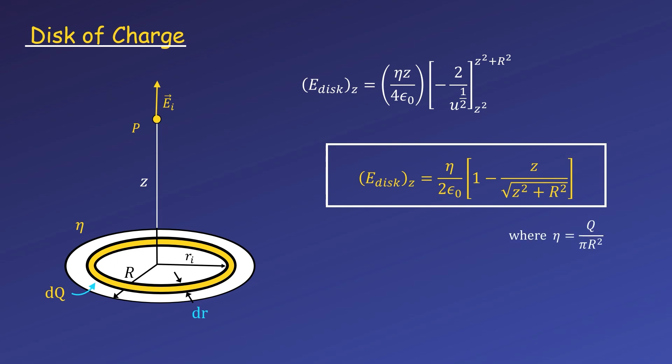And remember, our surface charge density eta is equal to the total charge over the area, which is πR². This equation is valid for positive z values, or above the disk. The field is the same below the disk, but points downward, so it's just negative.